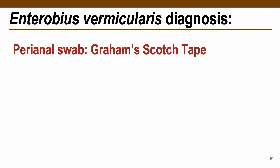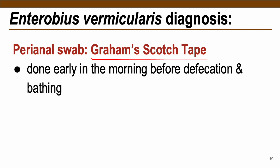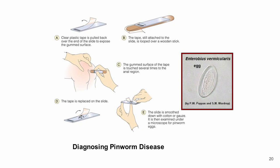For diagnosis, the most common method is the perianal swab or Graham's scotch tape method. This is done early in the morning before defecation and bathing of the patient — most patients are children. A clear plastic tape is pulled over a slide, looped over a tongue depressor, pressed several times to the anal region, then replaced on the slide, smoothed with cotton or gauze, and examined under a microscope for pinworm eggs.